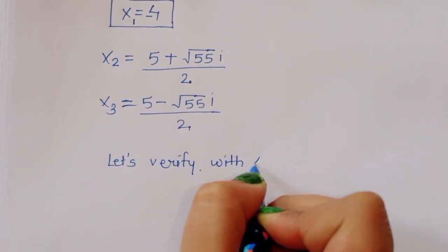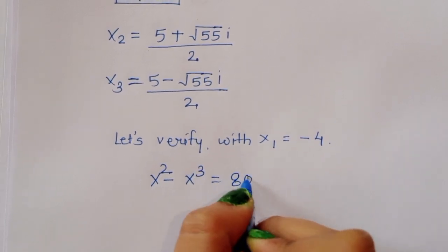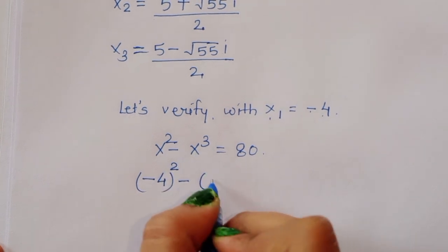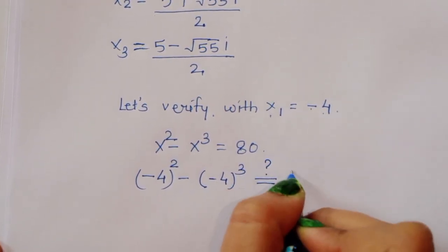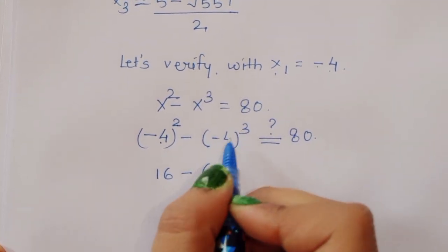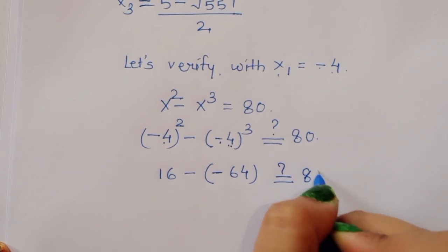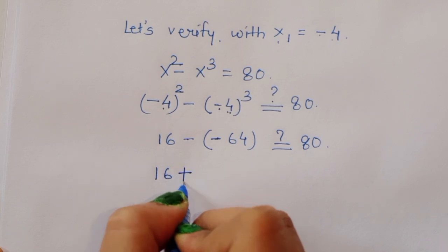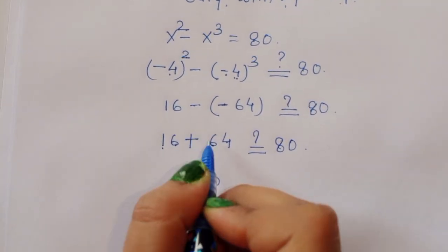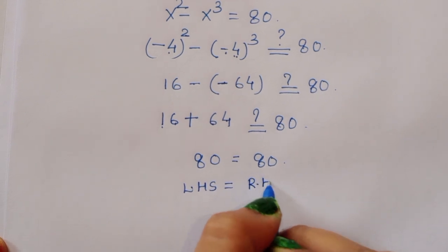Now let's verify the solution with x₁ equals minus 4. The original equation is x squared minus x cubed equals 80. Substituting minus 4: (minus 4) squared minus (minus 4) cubed equals 16 minus (minus 64) equals 16 plus 64 equals 80. So LHS equals RHS — the solution is verified.